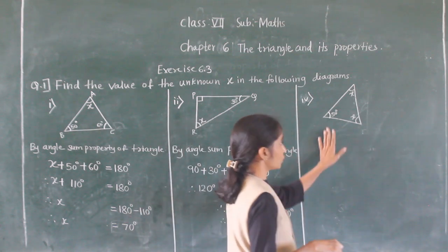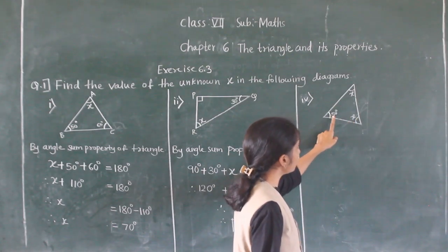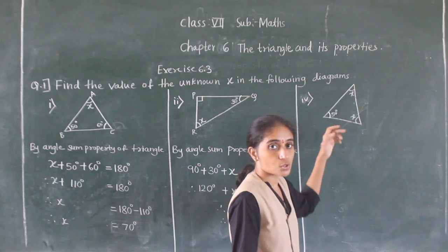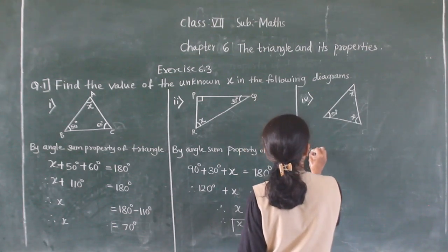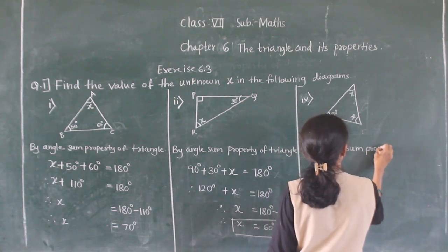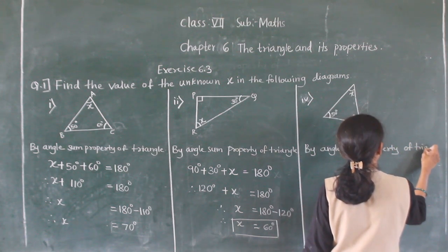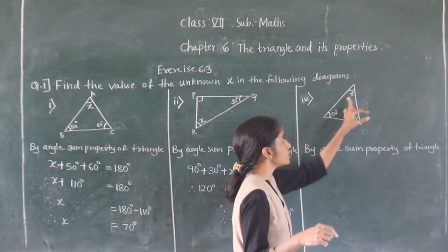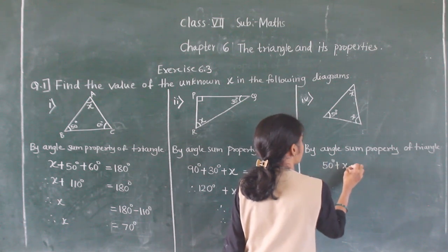Now let's solve question number 4. In this diagram there is a triangle with angles: one angle is 50 degrees, and the other two angles are both X. Using angle sum property of triangle, 50 degrees plus X plus X equals 180 degrees.